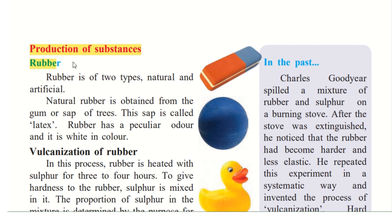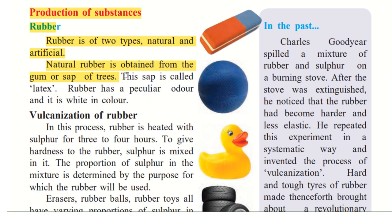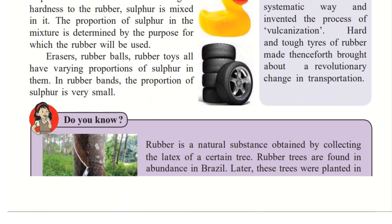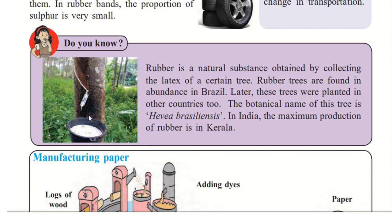So let's look at rubber first. Rubber is of two types: natural and artificial. Natural rubber is obtained from the gum or sap of trees — the juice of the trees — and this sap is called latex. You can see that the juice from this tree is collected in a container and it is white in colour. This is the natural rubber and it is called latex.